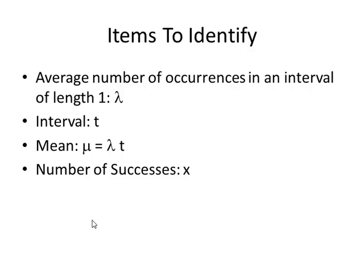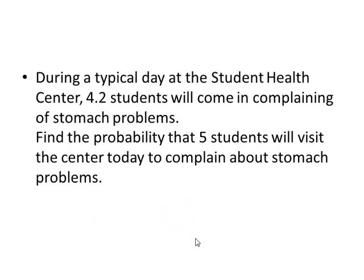The formula for Poisson probabilities, the probability of x successes, is e to the negative mu times mu to the x power, all divided by x factorial. In these problems we'll go over how to set them up, writing down the important values. I'll also give you some pointers on how to do these by hand as well as how to do them in StatCrunch.